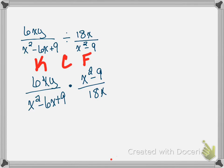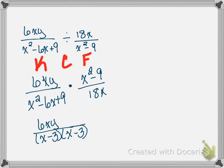Now I factor. x squared minus 6x plus 9 is a perfect square trinomial — it factors to x minus 3 times x minus 3, since negative 3 times negative 3 is positive 9 and negative 3 plus negative 3 is negative 6. For x squared minus 9 we have difference of perfect squares, which gives x plus 3 and x minus 3 — you do need to recognize that pattern.